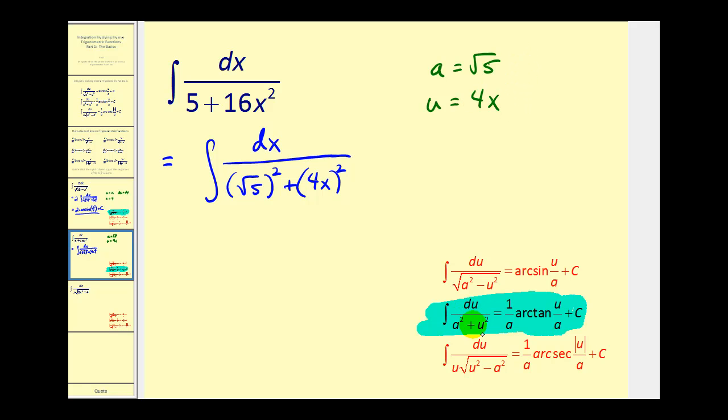Again, this formula is in terms of u, so it's important that we determine du. Well, du would equal four dx. Since our current integrand has just dx, let's go ahead and divide both sides by four. So we have one-fourth du is equal to dx. Let's go ahead and rewrite this in terms of u using a, u, and one-fourth u equals dx. Okay, so dx is equal to one-fourth du.